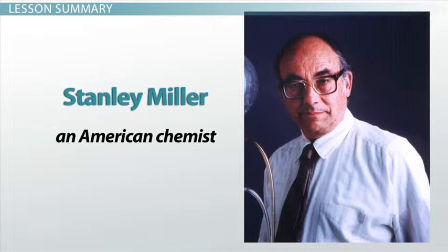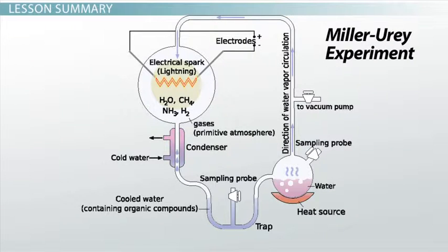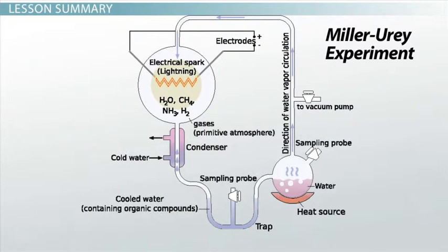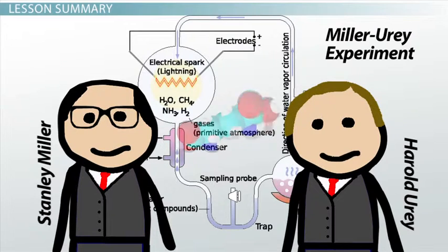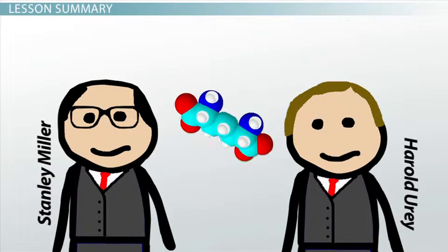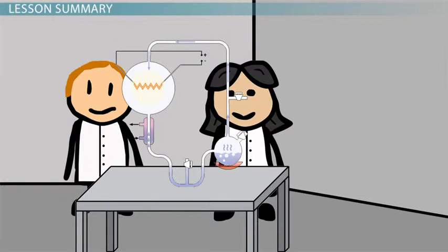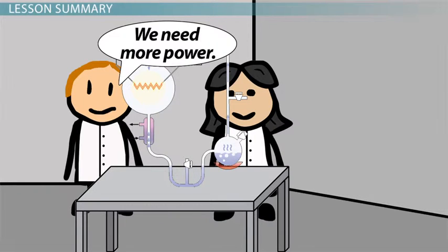Stanley Miller was an American chemist in the field of astrobiology. The Miller-Urey experiment gave us an idea of how life could have developed out of non-living matter, a process called abiogenesis. By the end of the experiment, Miller and Urey identified many new compounds, including several different types of amino acids, the small molecules that make up proteins, as well as simple carbohydrates. His work inspired decades of further research that continued to tease out how life could have originated on the early Earth.